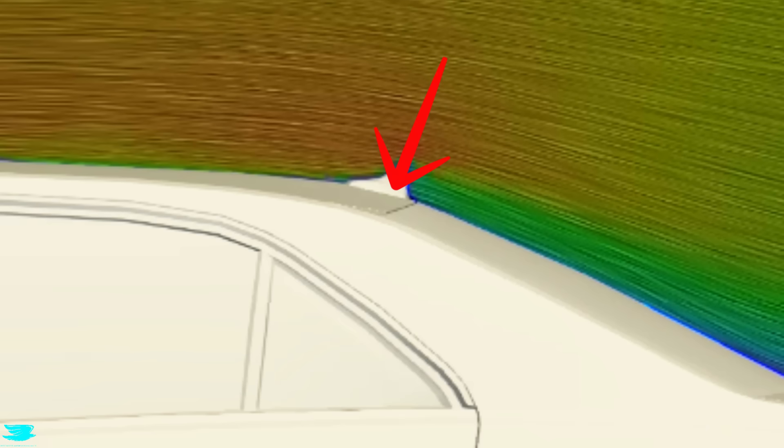How did Mercedes achieve that though? Well, they used a couple tricks. The first is that if you look at where the roof meets the rear window, there isn't much of an edge. Instead, it's more of a curved interface between the two. What that does is give the air a longer distance to change from the roof's angle to the rear window's angle.